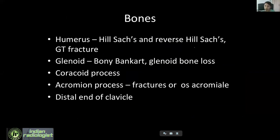For the humerus, look for Hill-Sachs and reverse Hill-Sachs lesions and greater tuberosity fractures. For the glenoid, look for bony Bankart lesions and antero-inferior glenoid bone loss. Also look for coracoid process fractures, acromion process fractures, and importantly the distal end of clavicle — we usually tend to miss this because it comes in the periphery of the scan. Make sure to look at the distal end of clavicle because there can be stress fractures and stress edema, particularly in weightlifters.